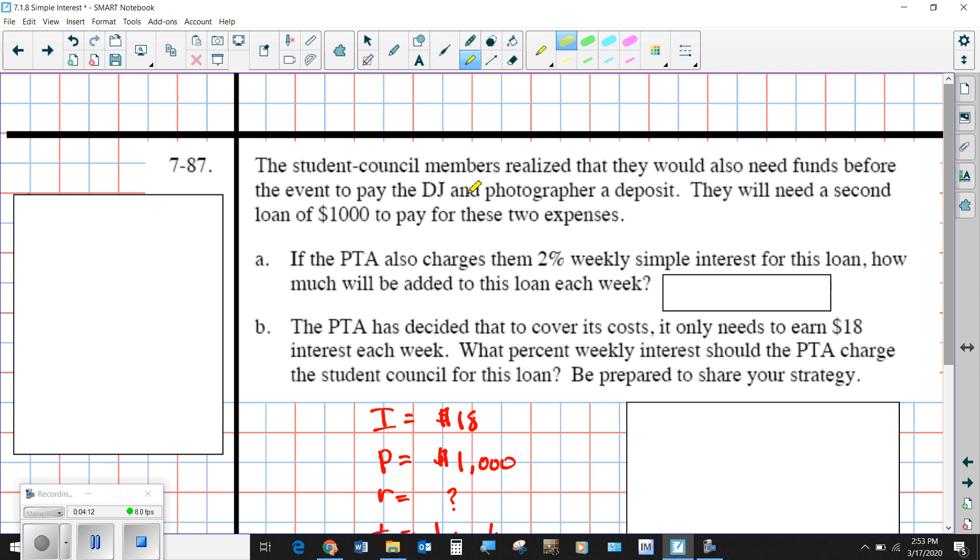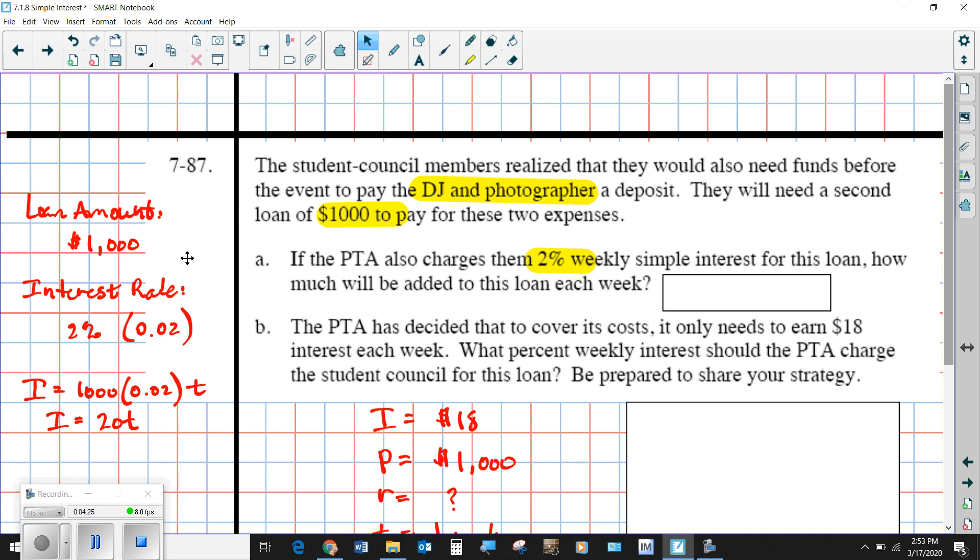Here's another situation where they say we need another $1,000 because we forgot we got to hire a DJ. So at 2%, how much would that be? The loan amount is $1,000. 2% of $1,000 is $20. So this would be the proportional relationship. If you spend no time borrowing money, you don't have to pay any back. But every week thereafter, you have to pay back $20. Now the PTA is being very kind and says we don't necessarily need $20 per week. We'll take $18 per week.